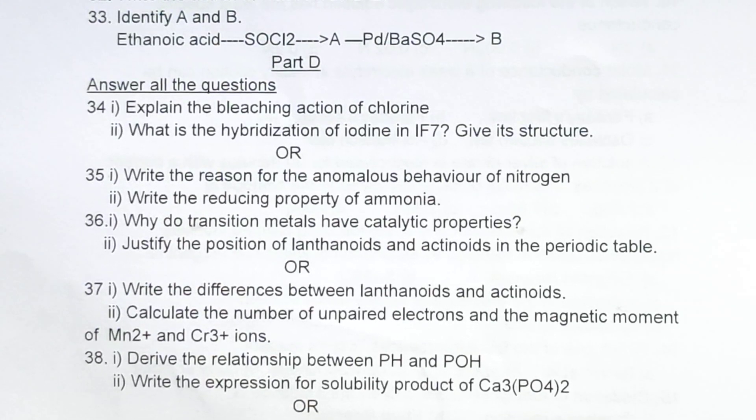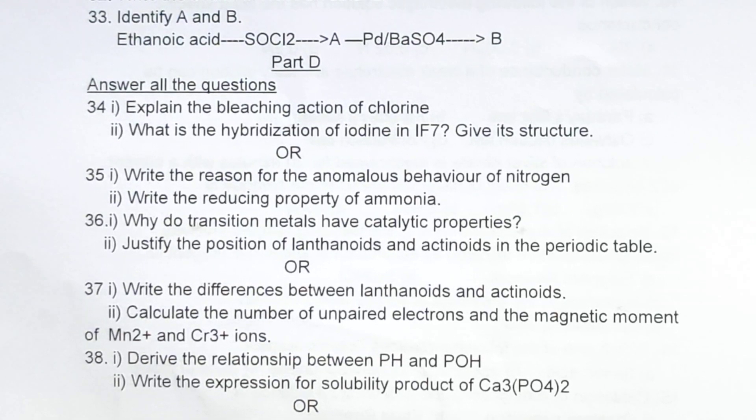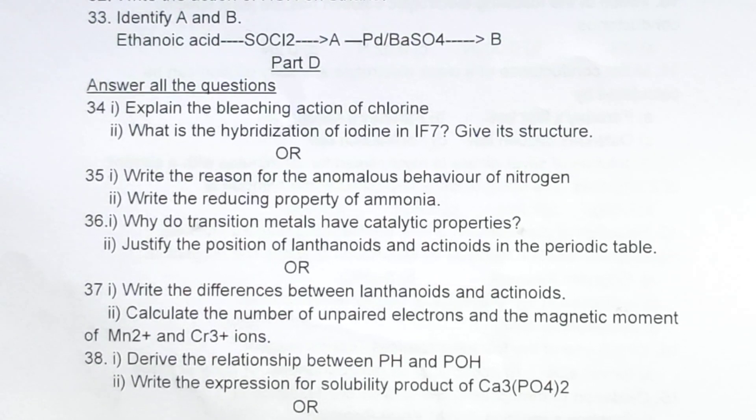Then 36.1: Why do transition metals have catalytic properties? Justify the position of lanthanoids and actinoids in the periodic table. 37.1: Write the differences between lanthanoids and actinoids. Calculate the number of unpaired electrons and magnetic moment of Mn²⁺ and Cr³⁺ ions.